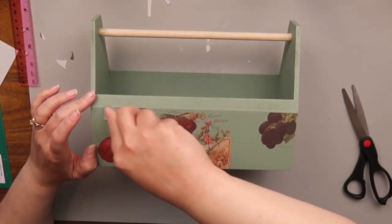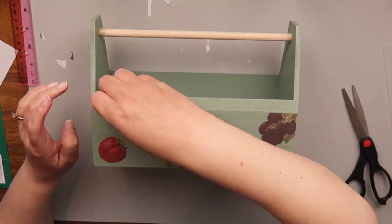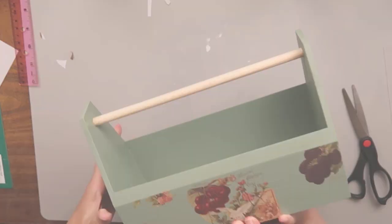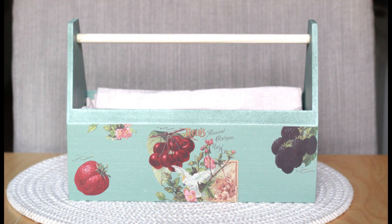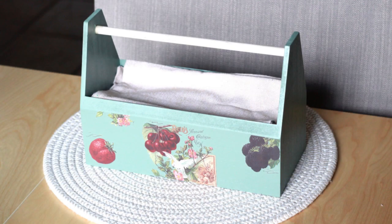So I styled mine using some napkins. I put some napkins in it. You could certainly put some in season fruit. You could gather a bunch of things and put it in there for like a gift for somebody. I think it would make a cute caddy for a gift.